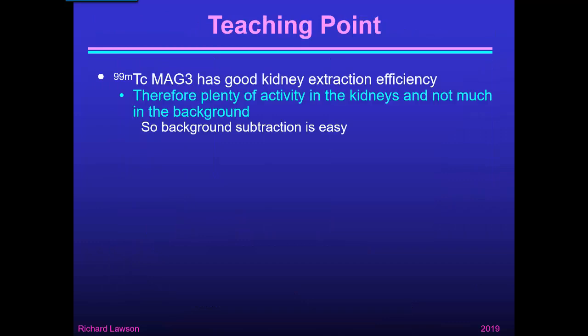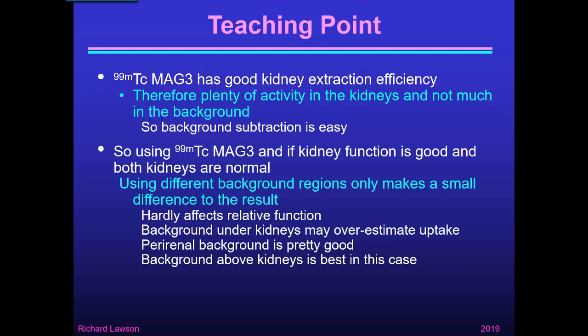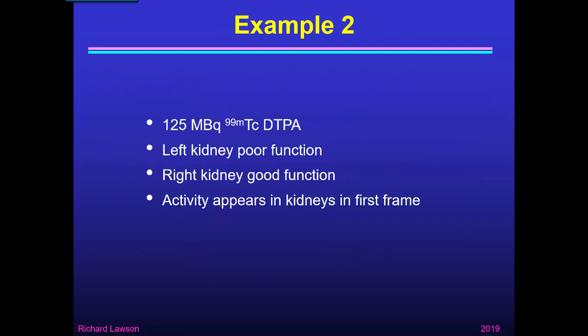The teaching point from this study is that Technetium-99m-MAG3 has good kidney extraction efficiency, therefore there's plenty of activity in the kidneys and not much in the background, so background subtraction was easy for this particular patient. When using MAG3 with good kidney function and both kidneys normal, using different background regions only makes a small difference — it hardly affects the relative function. But here's another case which shows that it does matter.